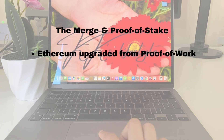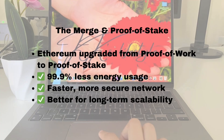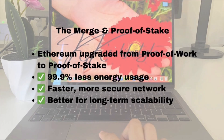In 2022, Ethereum went through a major upgrade called the Merge. It transitioned to a proof-of-stake consensus mechanism, making it more energy efficient compared to Bitcoin's proof-of-work. This transition reduced energy consumption by over 99.9%, making Ethereum much more eco-friendly. It also made the network faster, more secure, and better prepared for long-term growth and scalability.